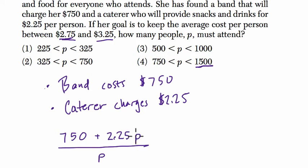All the people show up, they pay $2.25. You're charged $2.25 for each person that shows up. You also have to pay $750. To find out how much that was per person, you divide by the number of people.